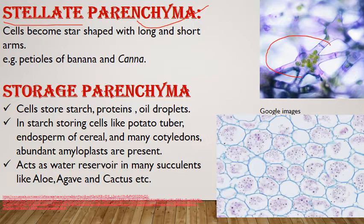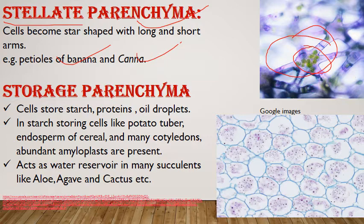Next is stellate parenchyma — 'stellate' means star-shaped. As seen here, it is a branched or armed parenchyma with a central body and short or long arms. This is known as stellate parenchyma and is present in hydrophytes and some herbaceous angiosperms — for example, in the petioles of banana and Canna.